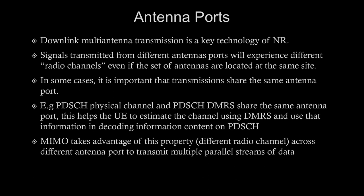MIMO takes advantage of having different radio channels across different antenna ports to transmit multiple parallel streams of data — this is a kind of diversity. When transmitting over multiple antennas, not all antennas will experience bad channel conditions; at least one transmit-receive antenna pair will have a good channel, so information can be transmitted successfully.